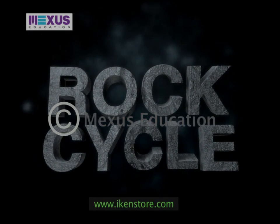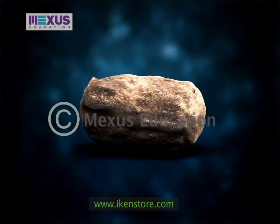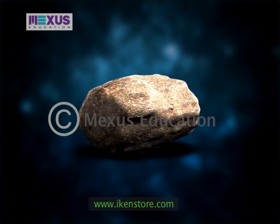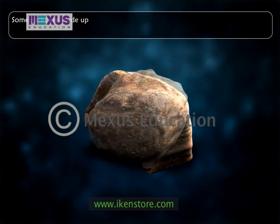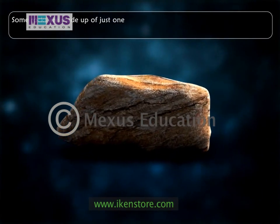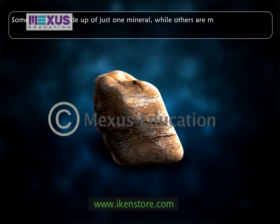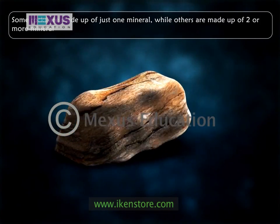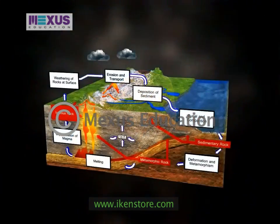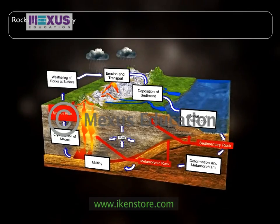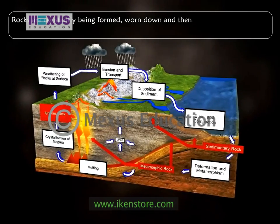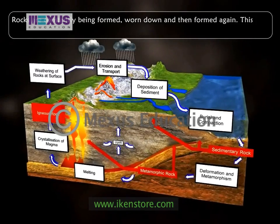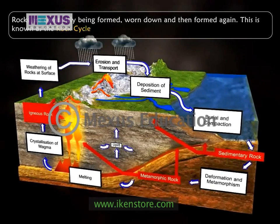Rock Cycle. Rocks are the most common material on earth. Some rocks are made up of just one mineral, while others are made up of two or more minerals. Rocks are constantly being formed, worn down and then formed again. This is known as the rock cycle.